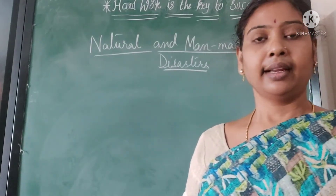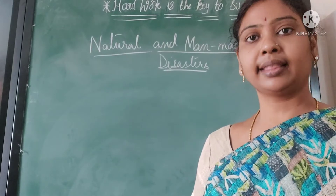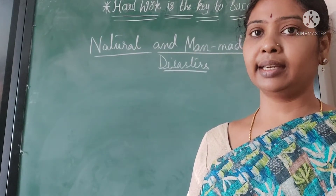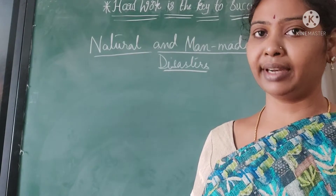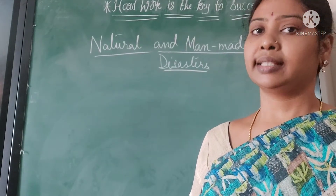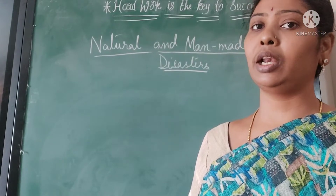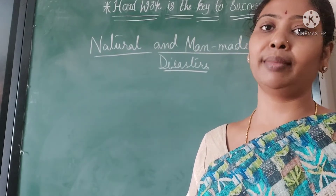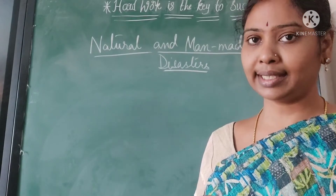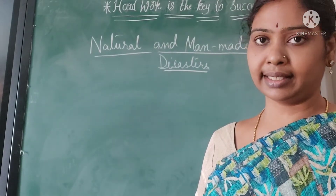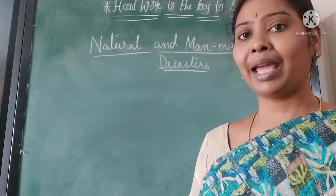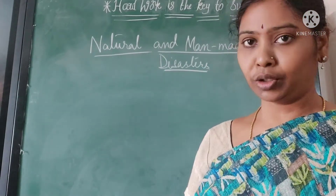What is a disaster? Any calamitous event which occurs suddenly and which causes a lot of human, environmental, or economic losses is known as a disaster. This disaster may be manmade or natural.